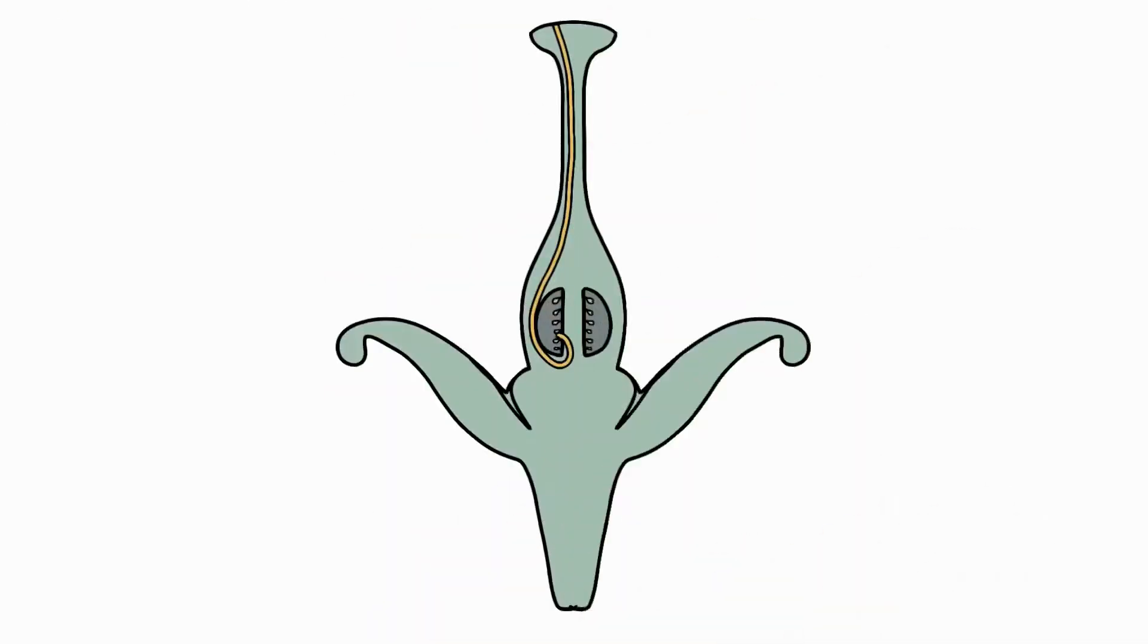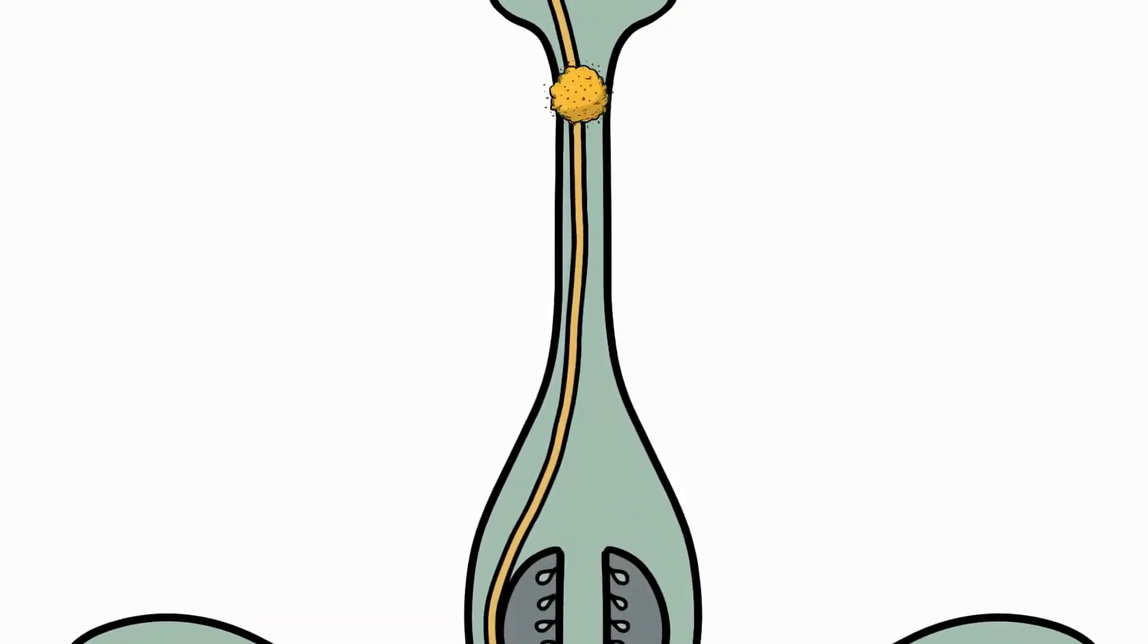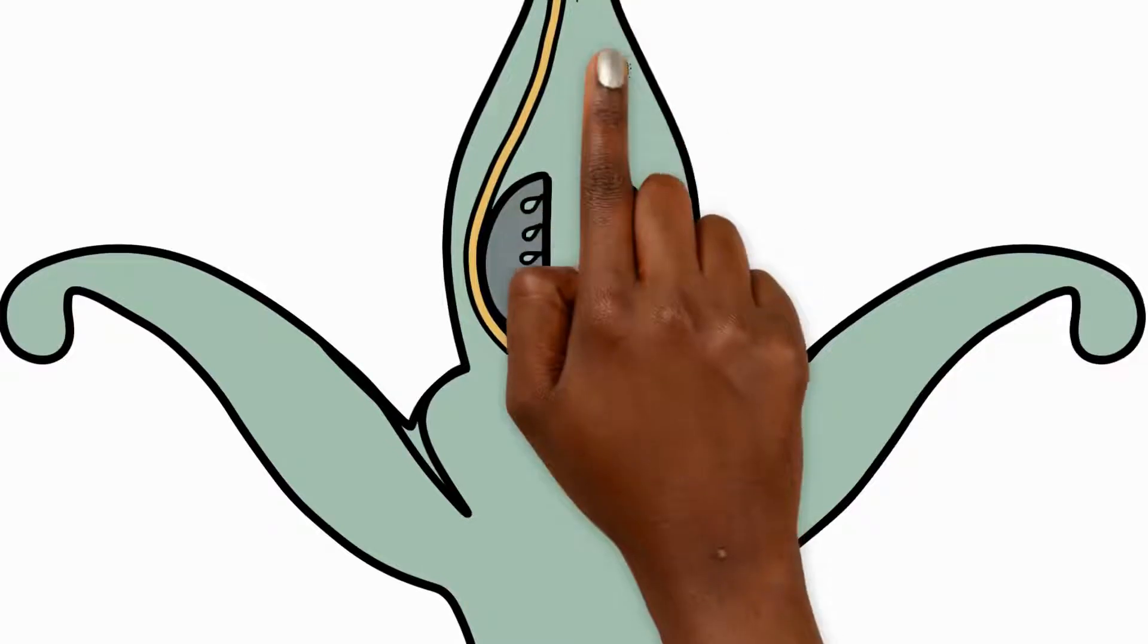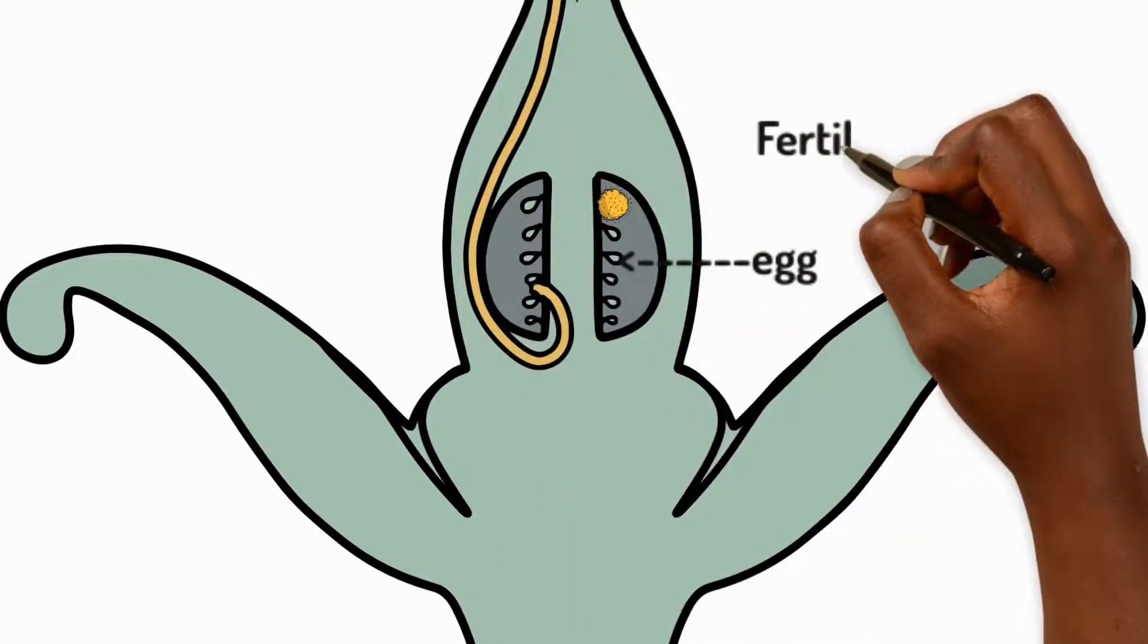Once pollen reaches the right spot, it travels to an egg inside the flower. When pollen and egg meet, a seed forms and this is called fertilisation.